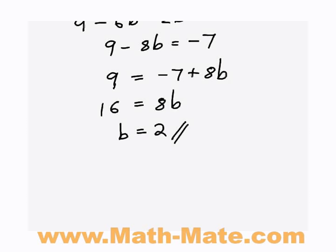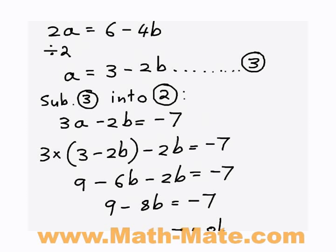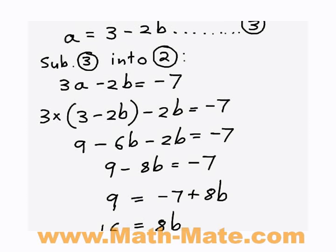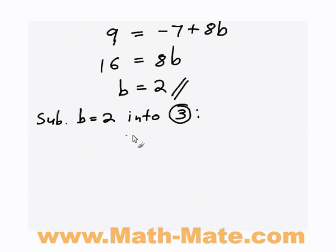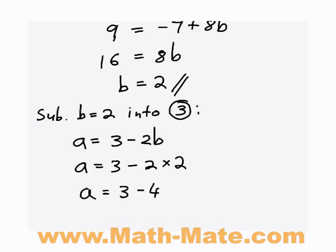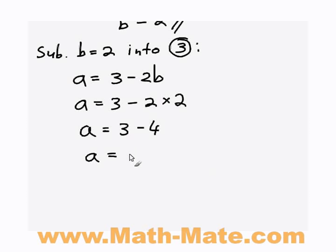We can use this value of b and substitute it back into equation 3 to find out what a equals. So I'm going to write down again, substituting b equals 2 into equation 3, so my marker knows what I'm doing. So a equals 3 minus 2b. Now instead of b, I can write 2. So a equals 3 minus 2 times 2. a equals 3 minus 4. So it's fairly simple. a equals negative 1.